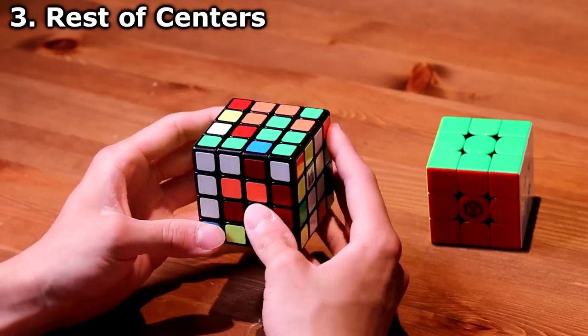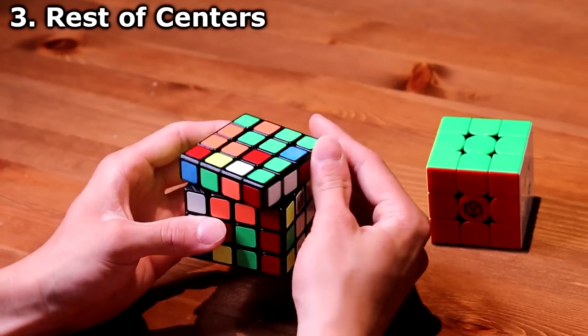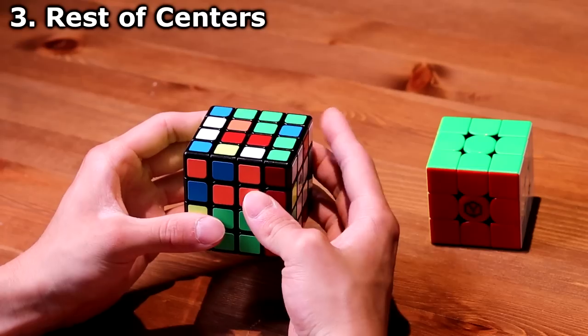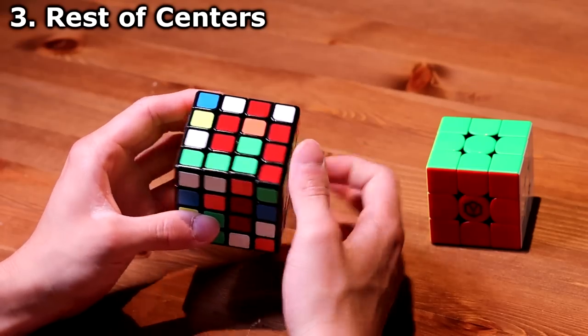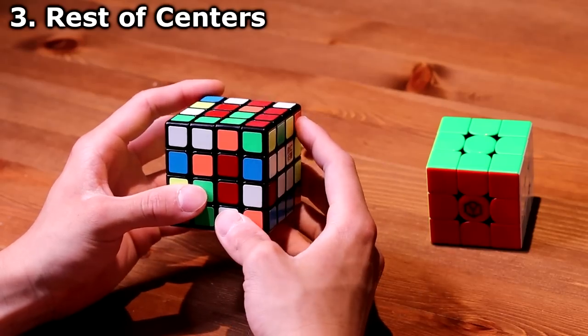So it preserves the blue center. And then I want to connect those two pieces. So move one layer like that, and then put it up, turn, and there's another 2x1 red block.